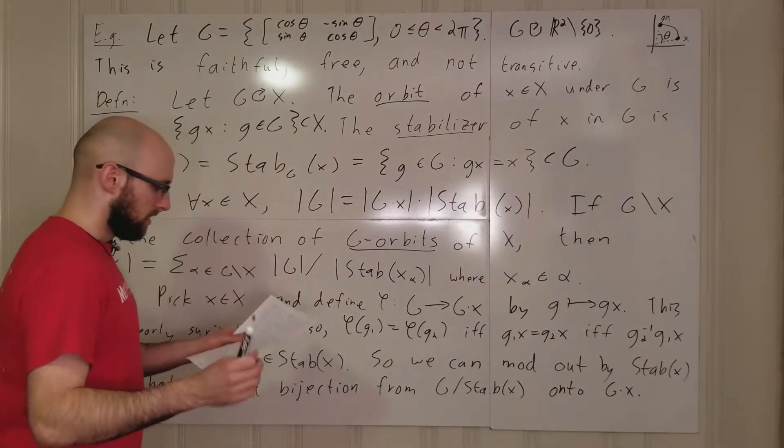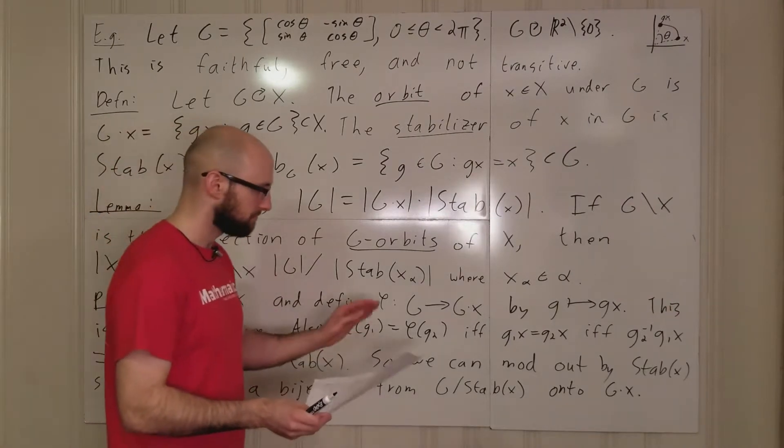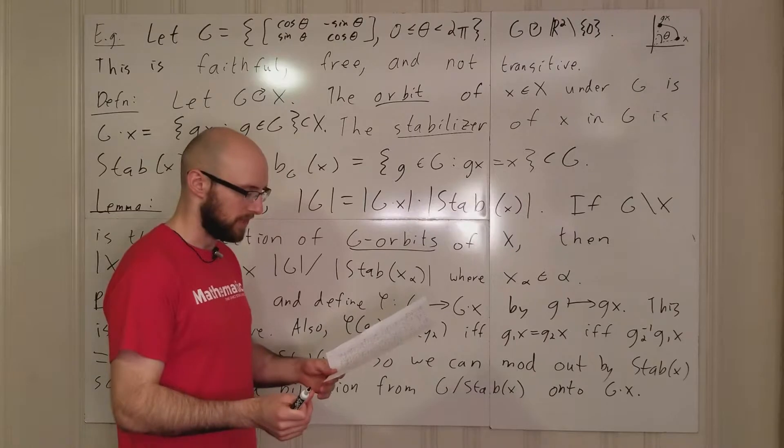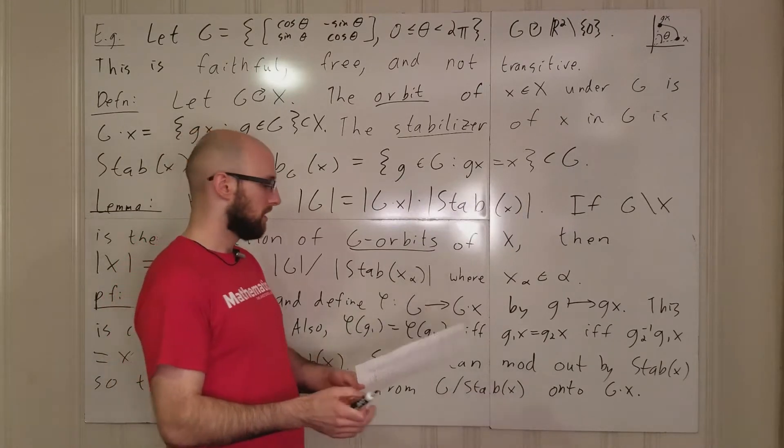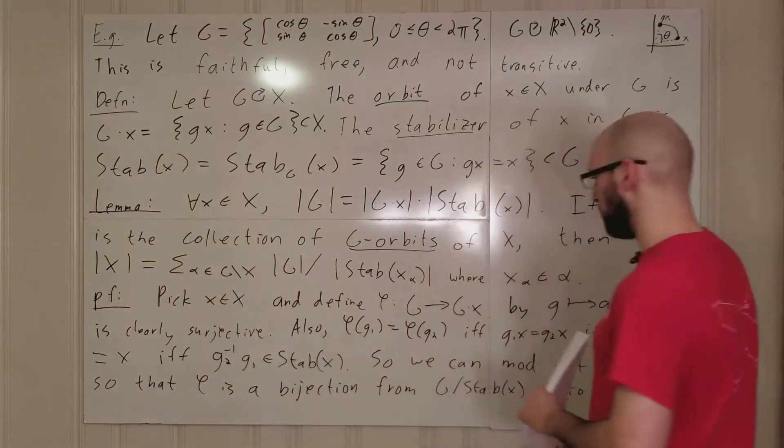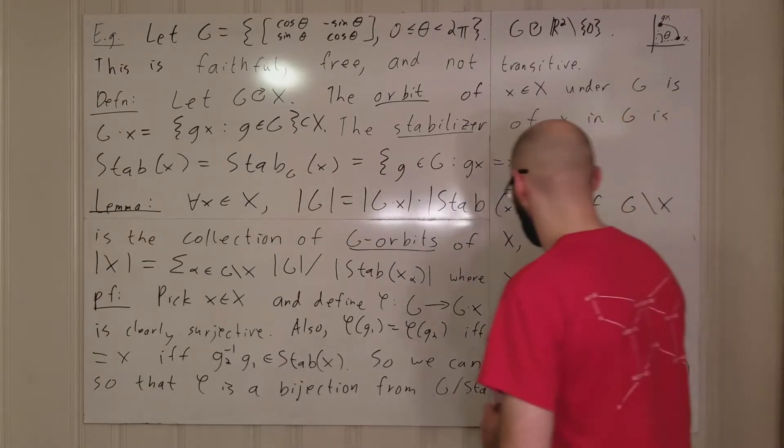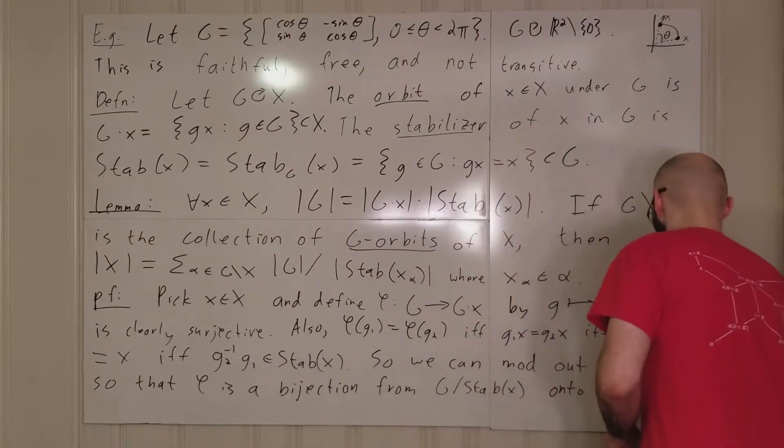So we can mod out and so everything's good. So, a little wordy, but this all works. So now what? So we have a bijection from this to this. So if it's a bijective map...